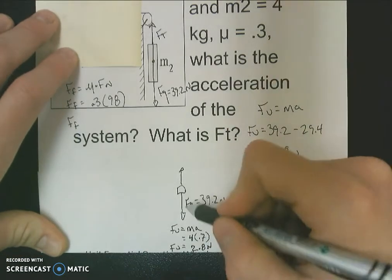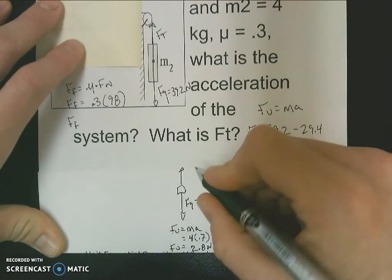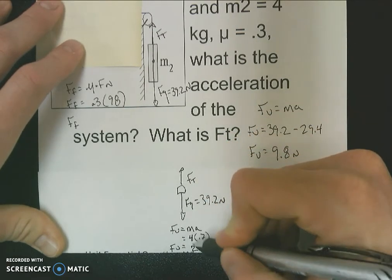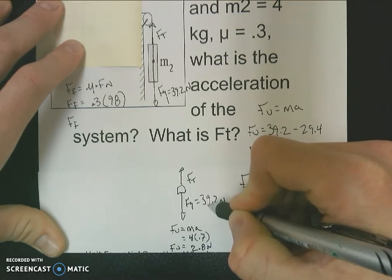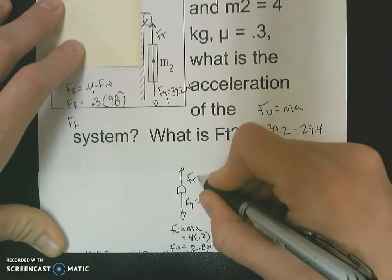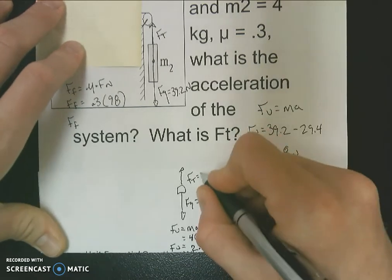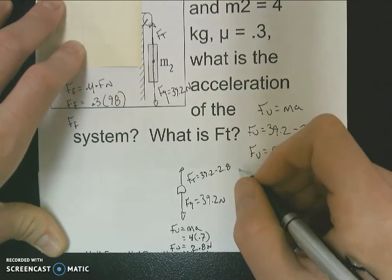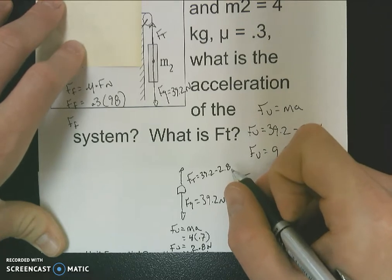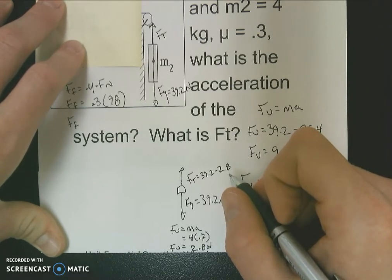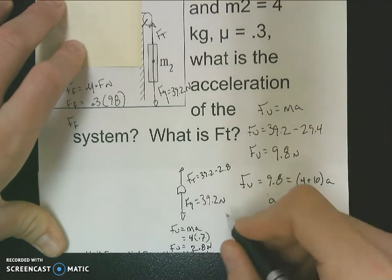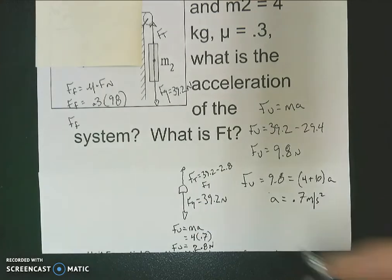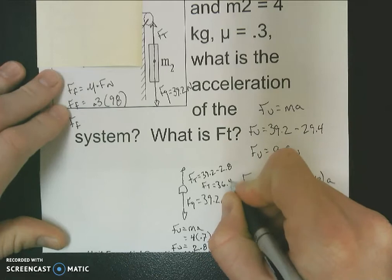These two forces are in a tug of war — 39.2 newtons down, and a force of tension up. Since I know this is going to accelerate down, the unbalanced force means 39.2 is 2.8 larger than my force of tension. So to find my force of tension, it's going to be 39.2 minus 2.8, which gives me a force of tension of 36.4 newtons.